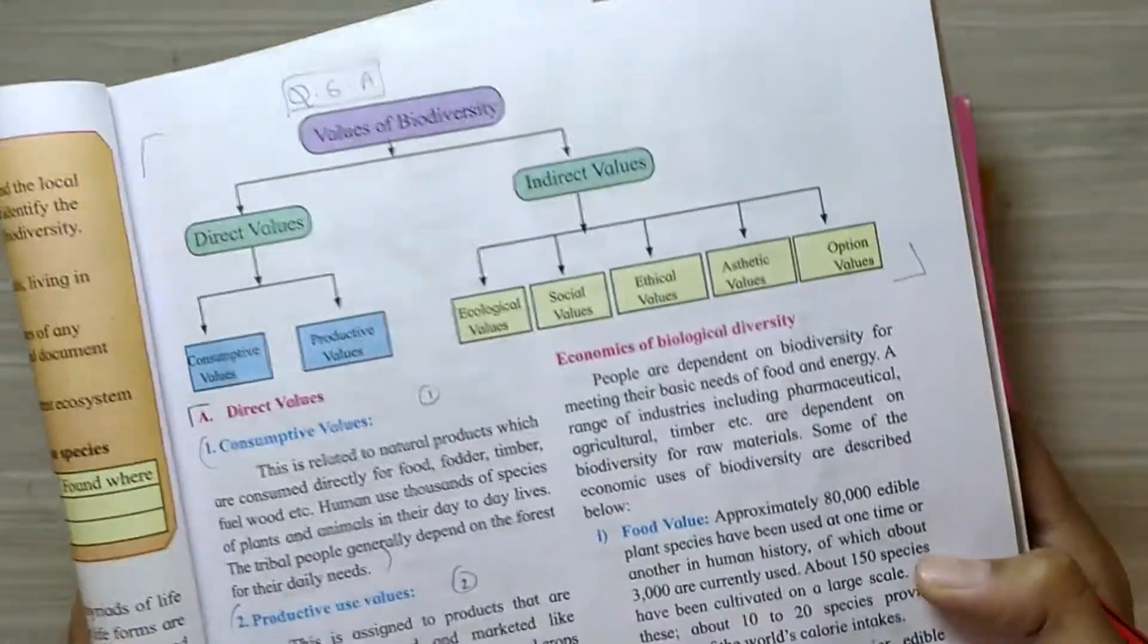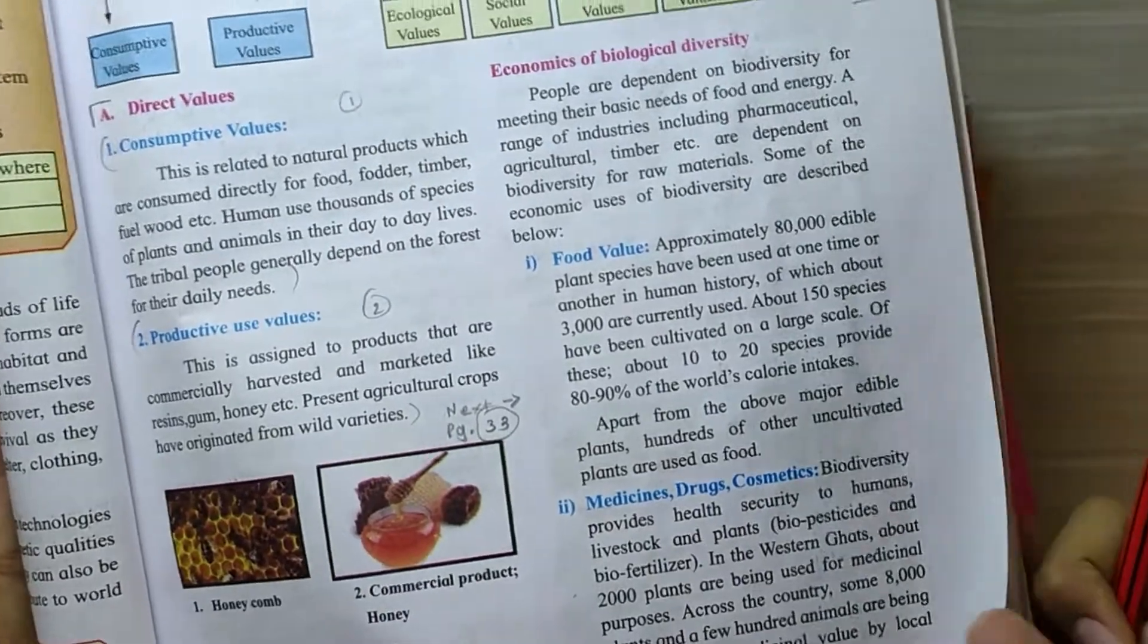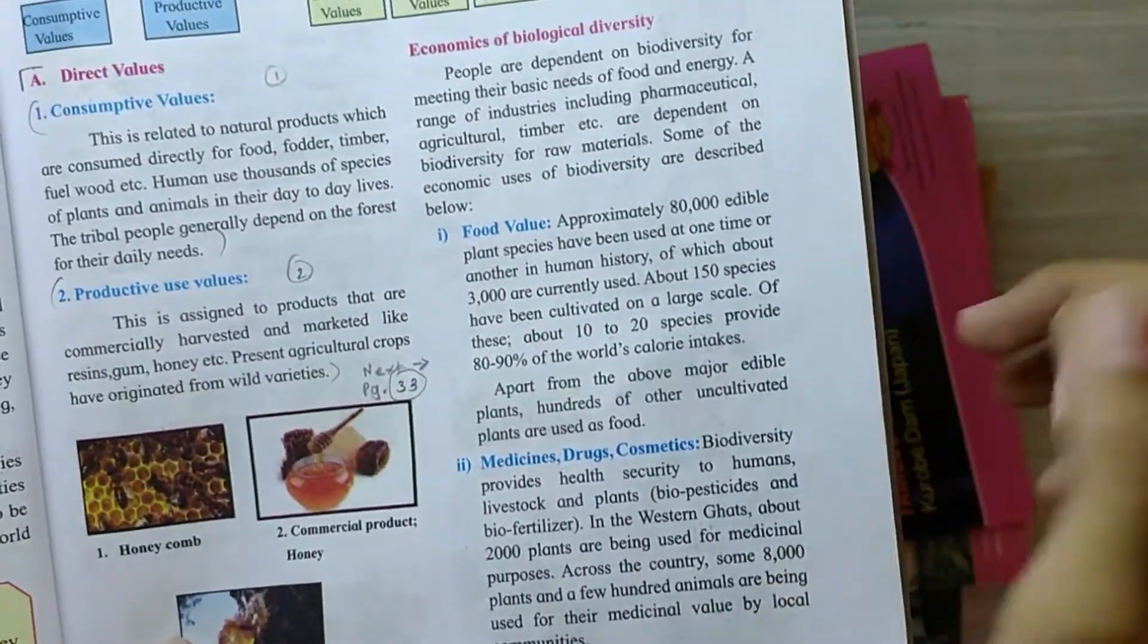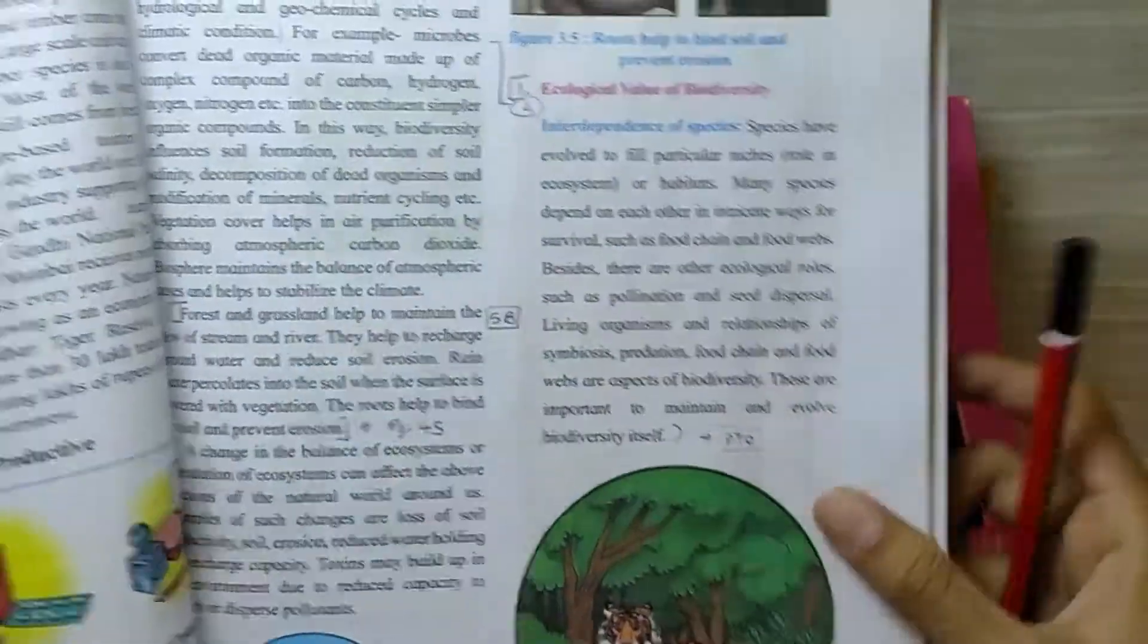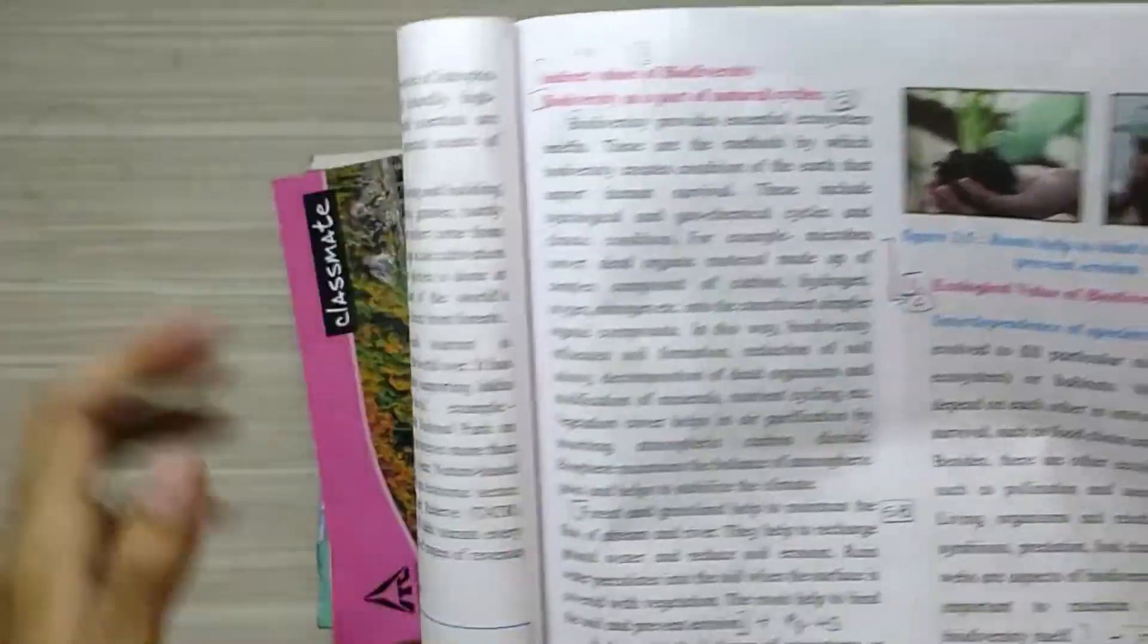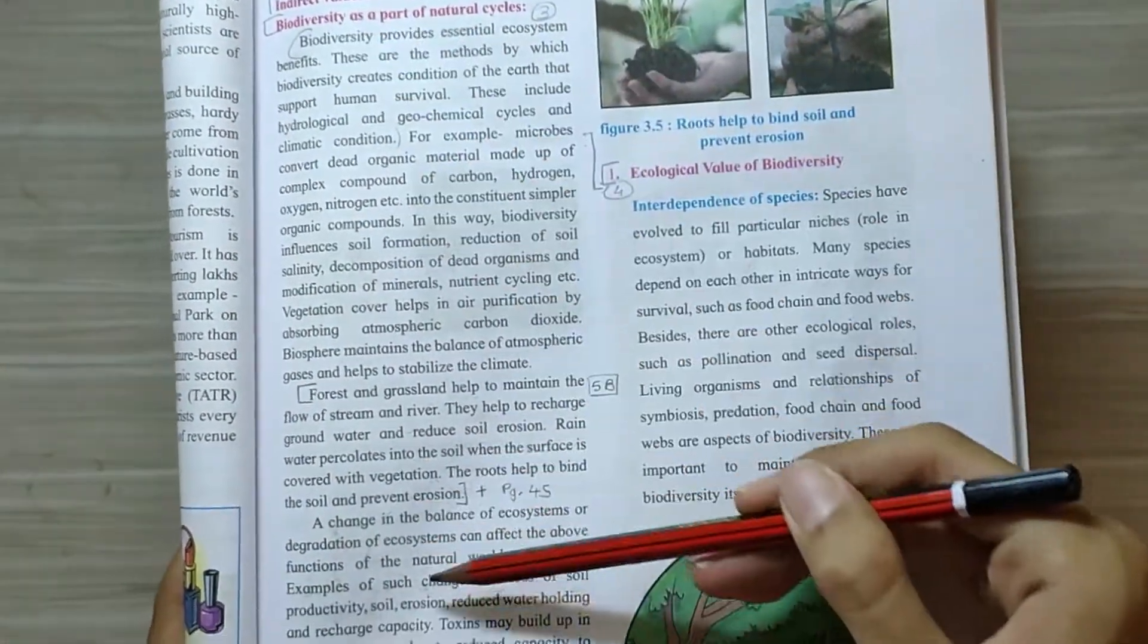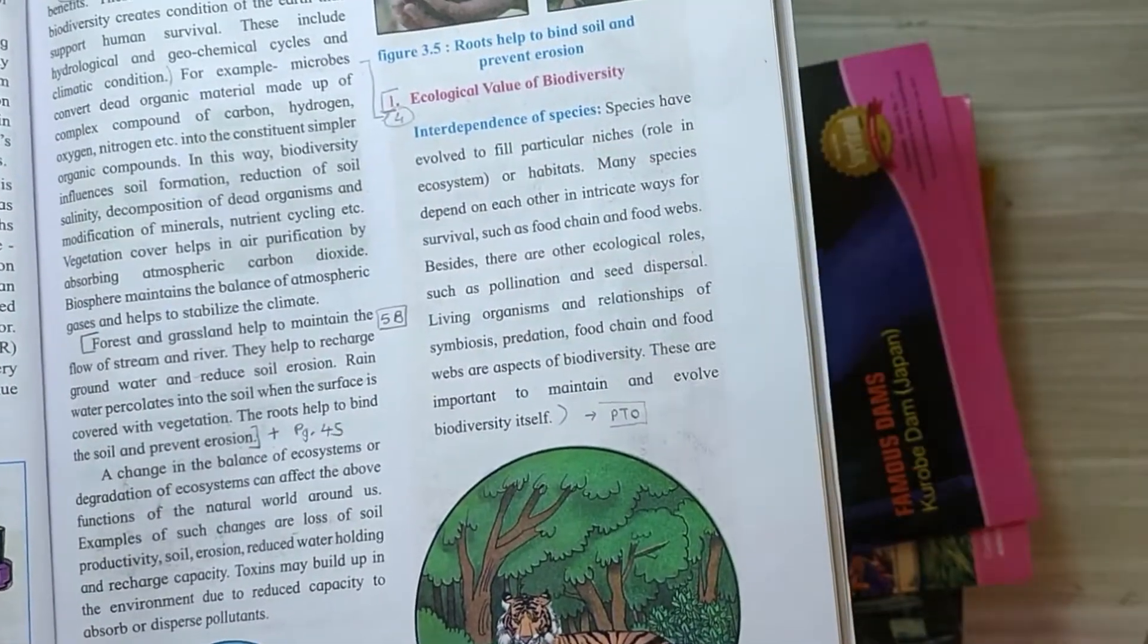So the first point will be values of biodiversity are as follows. Indirect values, you have to write consumptive values, productive uses value. No need to write all these and economics of biological diversity. Instead, you can skip all this part and you can write directly indirect values, and then write this also, ecological value.